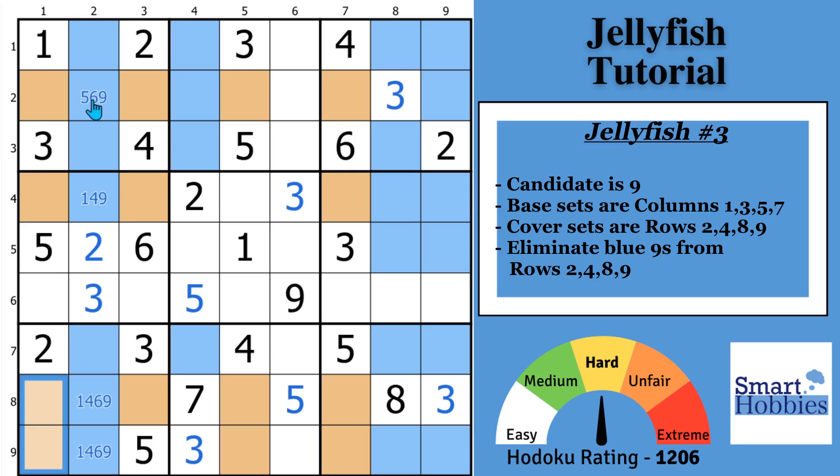So now these are our base sets. Columns 1, 3, 5, and 7. What are our cover sets? We're going to make the eliminations. Row 2, row 4, row 8, and row 9. Okay, so we remove all the colors there. And then we can remove all these 9s from those cells.